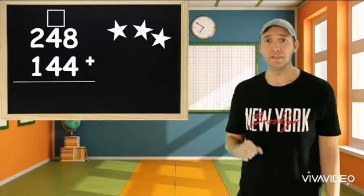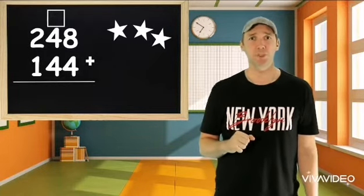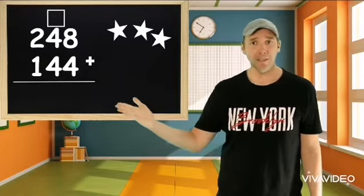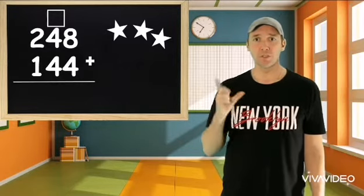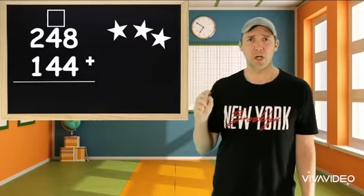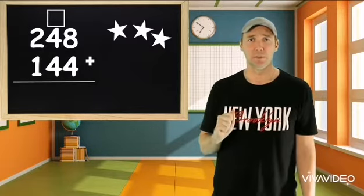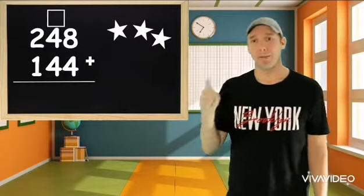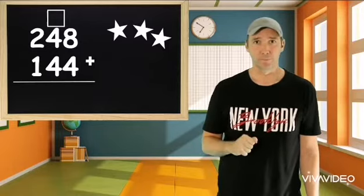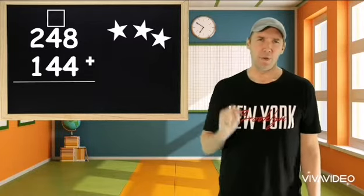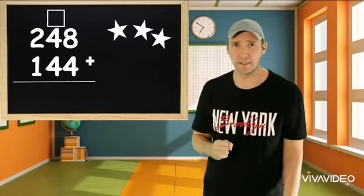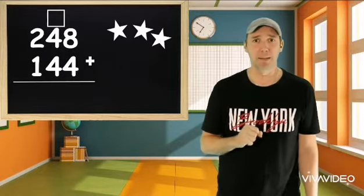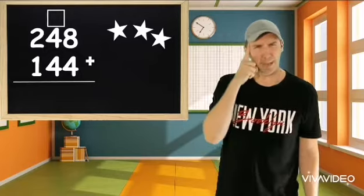The first one is 248 plus 144. So we always start in the ones place. So we have eight plus four. Now what I do, I use something called count on strategy. I take the biggest number, eight, and I put it in my head. Eight.